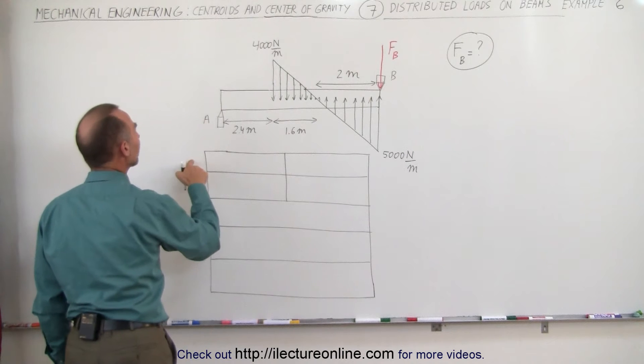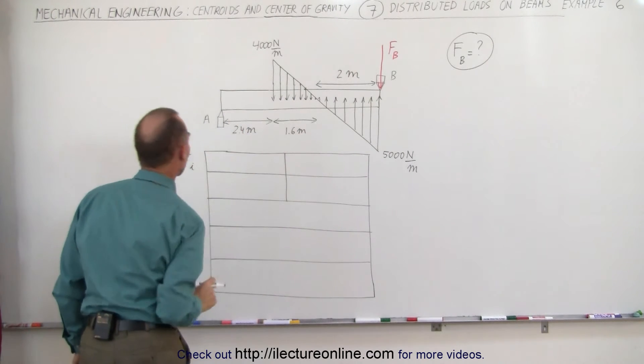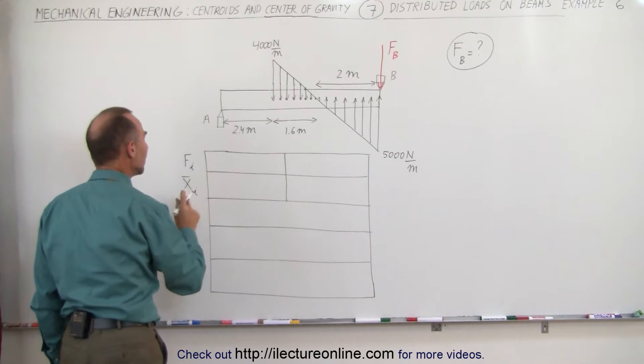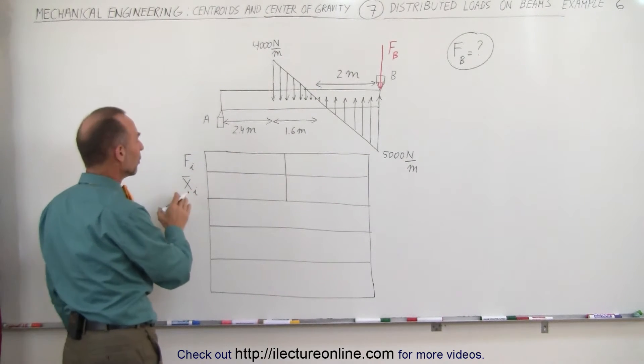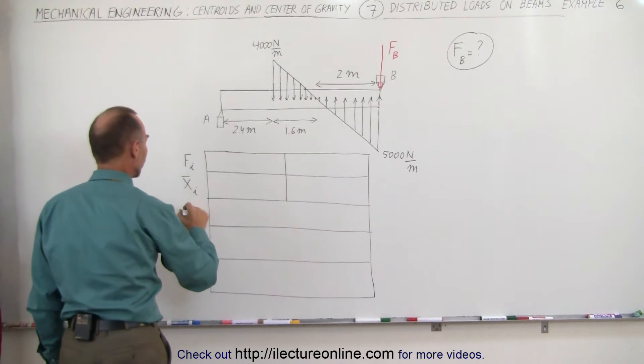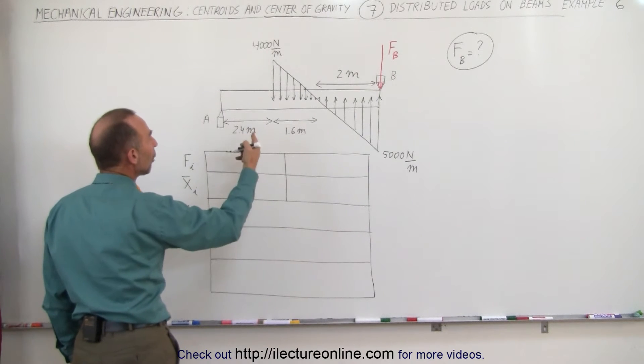The first row represents the force on each individual load segment. The second row represents the x-coordinate of the centroid of each of the load segments. The third row is the total moment about a point.